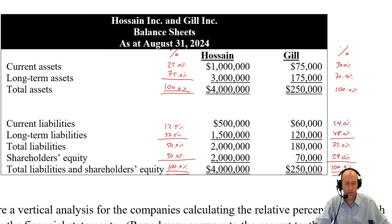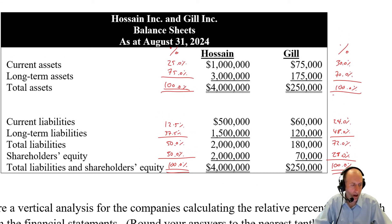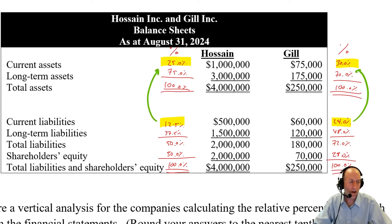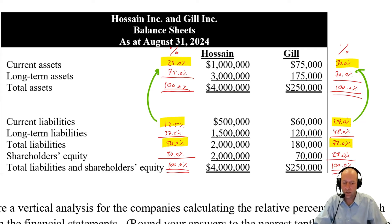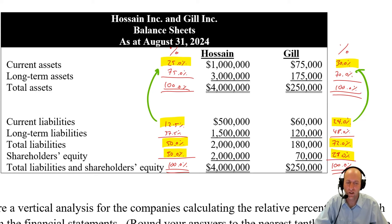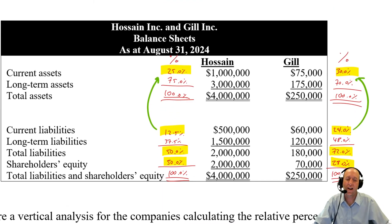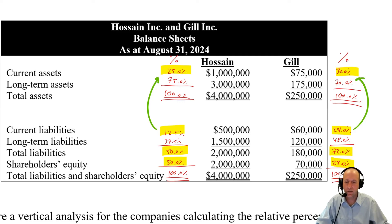Let's compare the balance sheets now. Eyeballing it, a few things stand out. Looking at current assets versus current liabilities, Hossein has roughly double the current assets needed to cover its current liabilities, whereas Gill has them covered but just barely. Also, Gill's total liabilities are much higher — 72% versus 50% — and Gill's total equity is much lower at 28% versus 50% for Hossein. I definitely prefer Hossein's balance sheet. It's in a much more stable and healthier financial position. So in terms of financial performance, I prefer Gill's income statement; but in terms of financial position, I prefer Hossein's — it's a mixed bag.